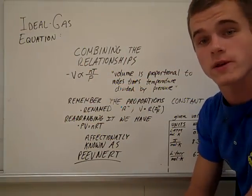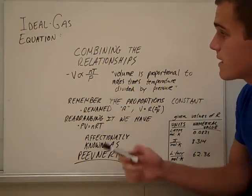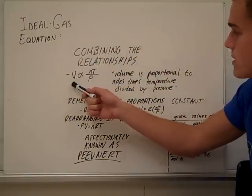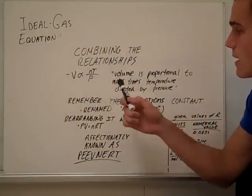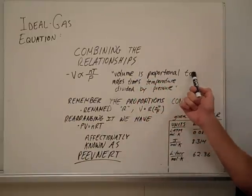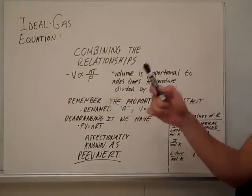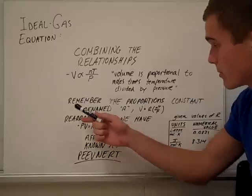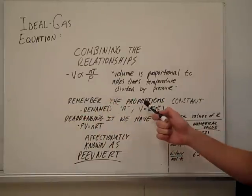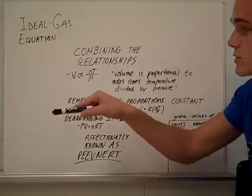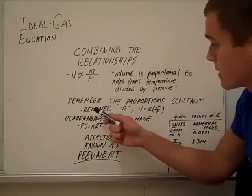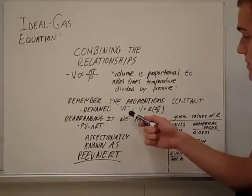And from all these laws, we have the ideal gas equation. By combining all the relationships, we get V is directly proportional to NT over P. Stated as, volume is proportional to moles times temperature divided by pressure. Remember, the proportions constant we used earlier as K. It was dependent on different variables. And in the ideal gas equation, it's renamed as R.